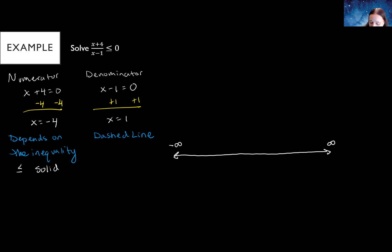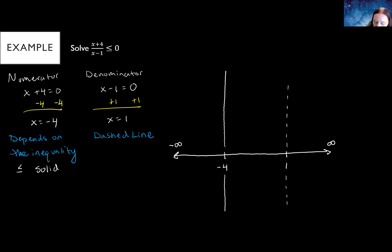We're going to use a dashed line for the denominator value and a solid line for the numerator value. Next we graph a number line and put these values on it. The value 1 gets a dashed line, and negative four gets a solid line. We've now split our number line into three sections. Our factors are written horizontally — we'll have a row for x + 4, a row for x − 1, and then at the bottom, (x + 4) / (x − 1).